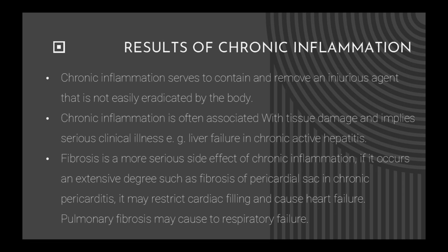Results of chronic inflammation. Chronic inflammation serves to contain and remove an injurious agent that is not easily eradicated by the body. It is often associated with tissue damage and implies serious clinical illness, such as liver failure in chronic active hepatitis. Fibrosis is a more serious side effect; if extensive, such as fibrosis of the pericardial sac in chronic pericarditis, it may restrict cardiac filling and cause heart failure. Pulmonary fibrosis may cause respiratory failure.